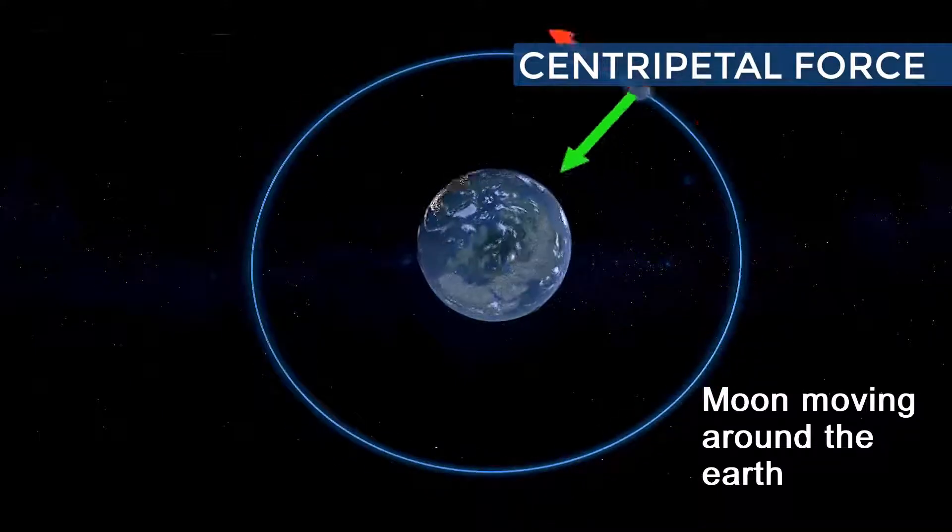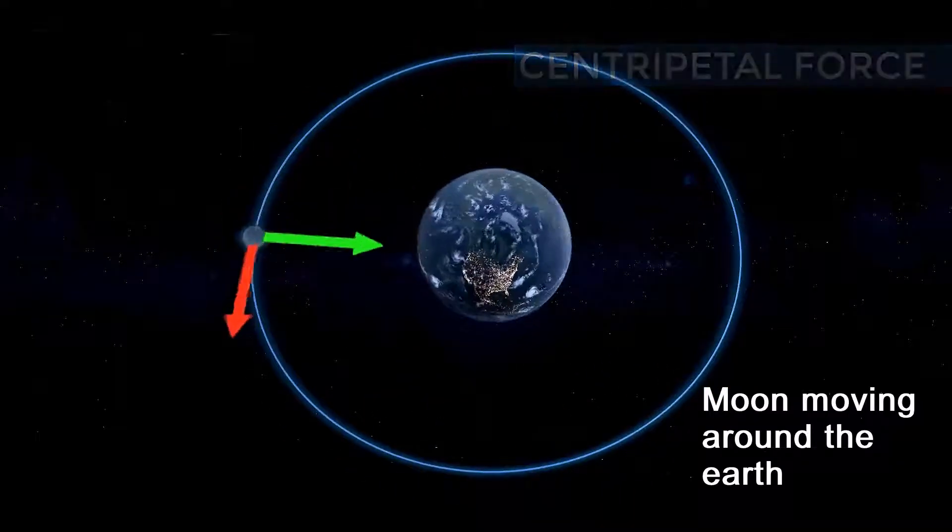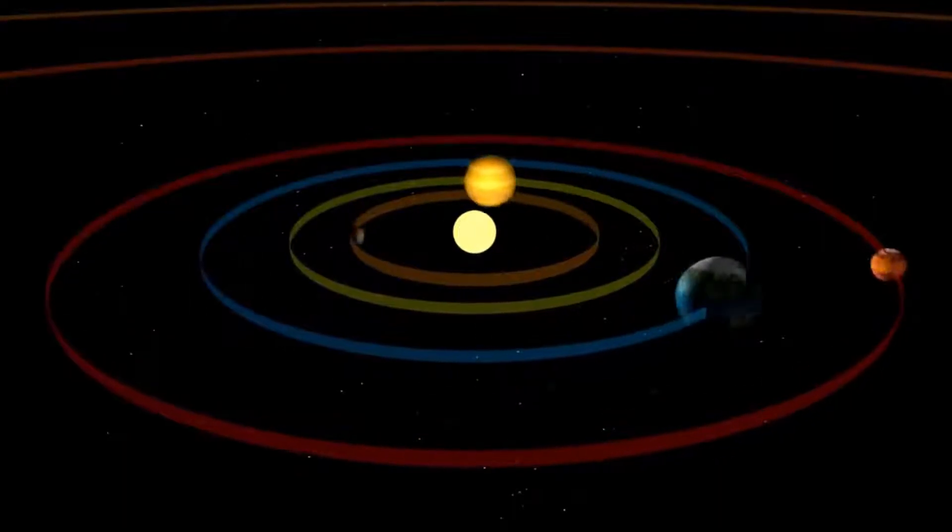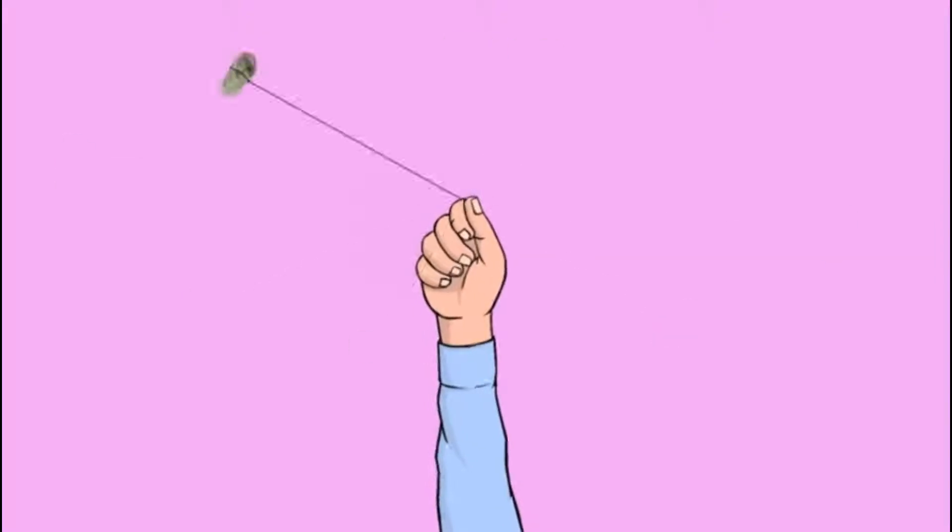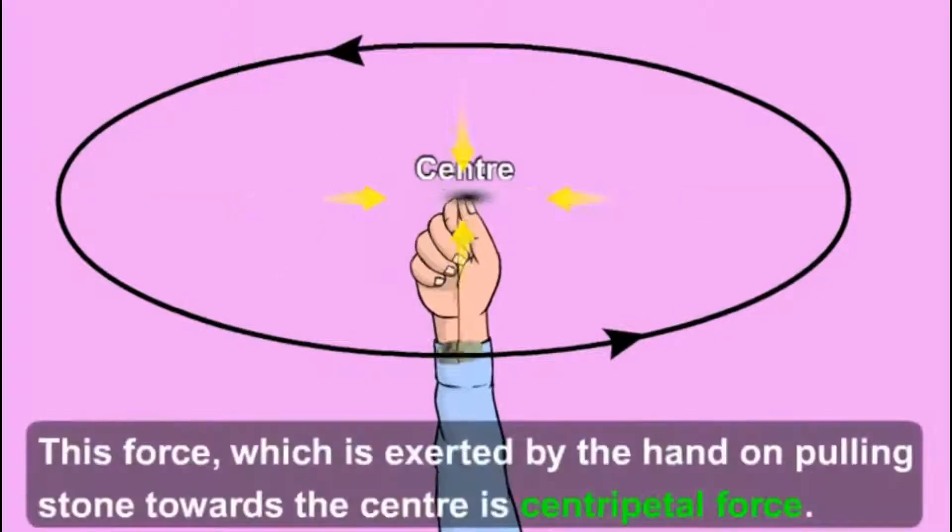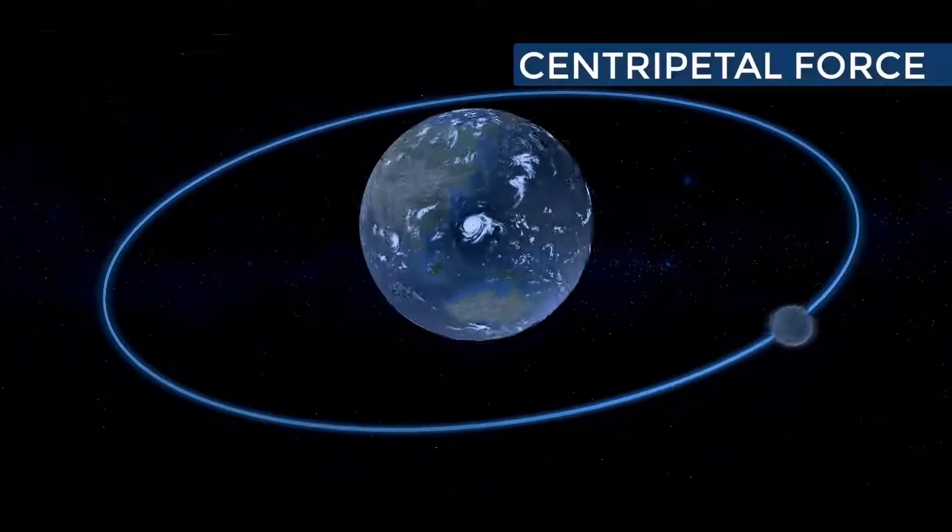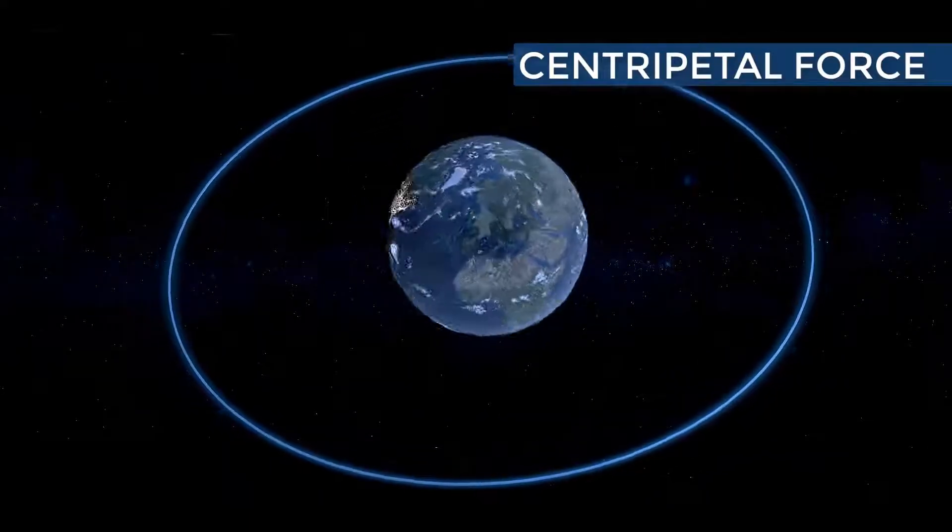So we have seen two reasons why the planets don't fall into the Sun. The first reason is that they keep on moving. They never stop. And the second reason is because of the centripetal force, which is a pull between the Sun and the planet, between the Earth and the moon, between the moons around the planets.